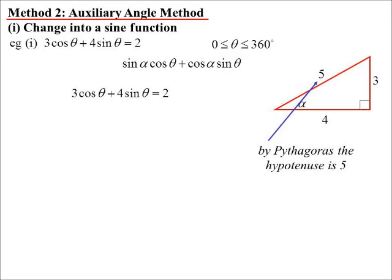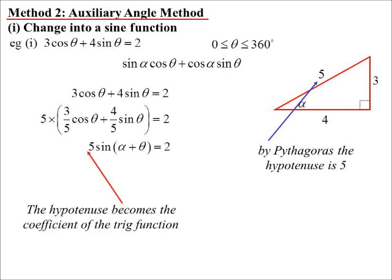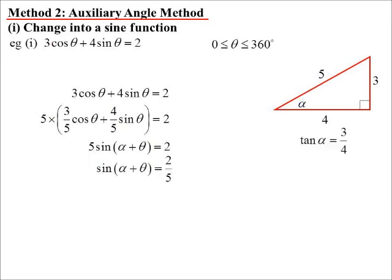So what we really have is 5 times (3 fifths cos theta plus 4 fifths sine theta) equals 2. The coefficient of my new trig function will always be the hypotenuse. So I work out my hypotenuse and I know it's going to be 5 sine (alpha plus theta) equals 2. Theta is the angle we're trying to find. What's alpha? I can go back to my triangle and use trig to work out alpha. It doesn't matter which ratio I use - sine, cos or tan. I used tan: tan alpha is 3 quarters, which gives me an angle of 36 degrees 52 minutes.